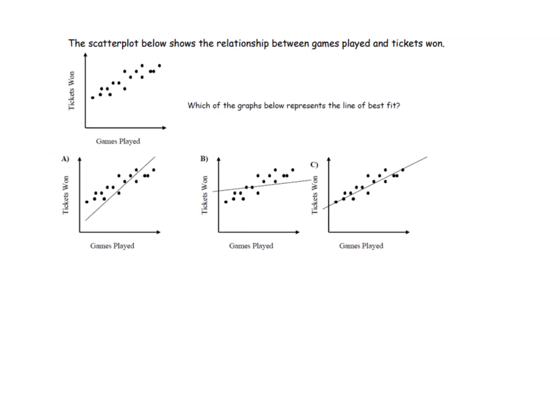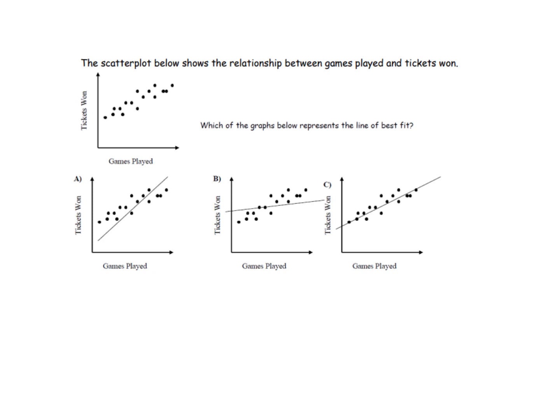Here's an example scatter plot showing number of games played versus tickets won. We want to draw a line of best fit through this scatter plot. Below it we have three options: A, B, and C.